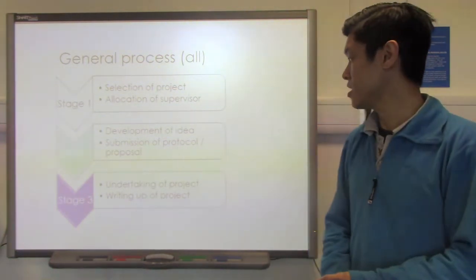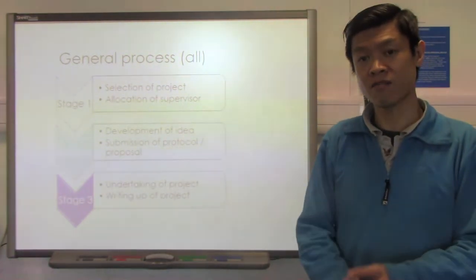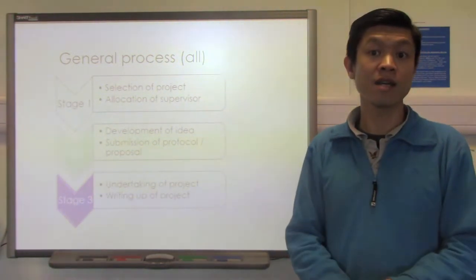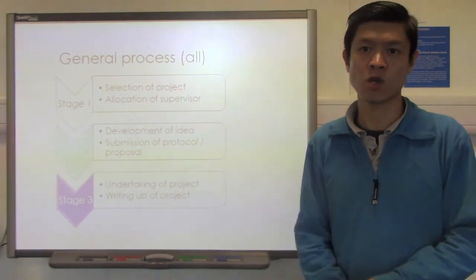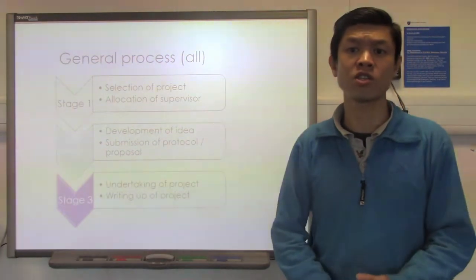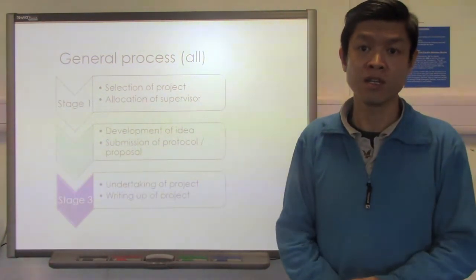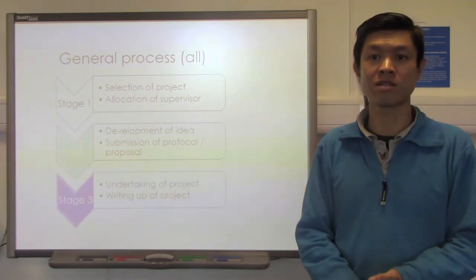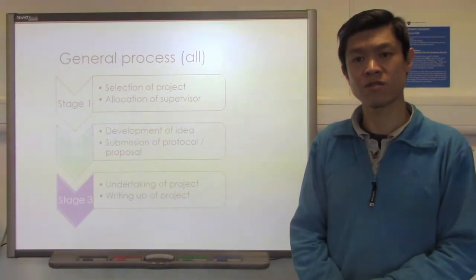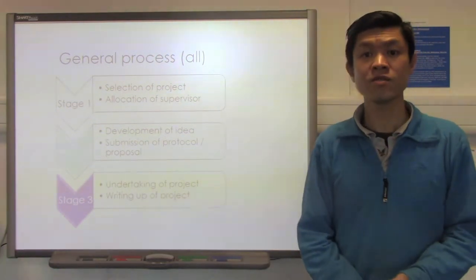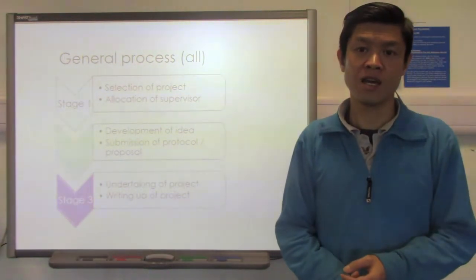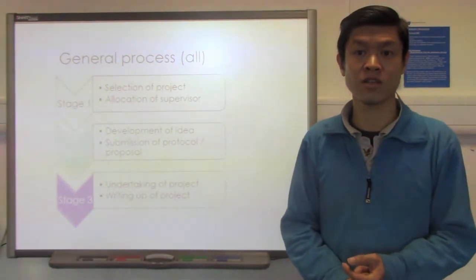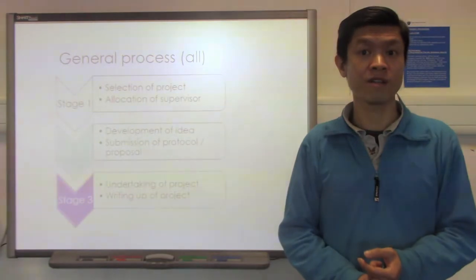The third stage is the actual undertaking of the project itself. For example, if you are doing data collection, this is the time when you actually start collecting data from participants. If you're doing a systematic review, this is the time when you do all the literature searches, the systematic approaches, and gather all the papers — so that you can finally write your 5,000-word systematic review. Once you've done all your analysis and have the data ready, it's time to write up the dissertation, which is your 5,000-word paper.